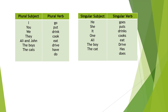I always ask you to sing the song: 'I, you, we, they — go, go, go. He, she, it, one — goes, goes, goes. I, you, we, they — put, put, put. He, she, it, one — puts, puts, puts. I, you, we, they — drink, drink, drink. He, she, it, one — drinks, drinks, drinks.'